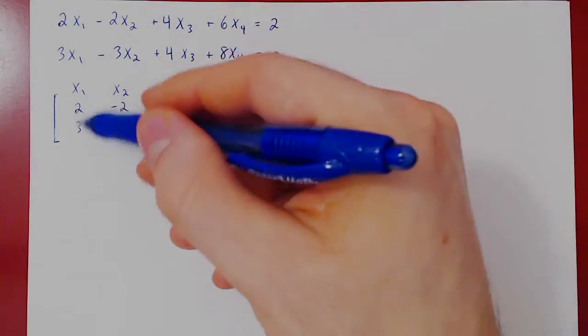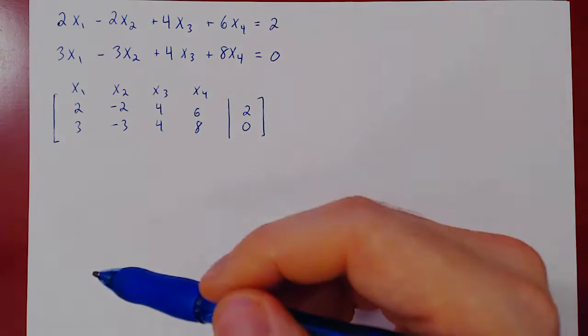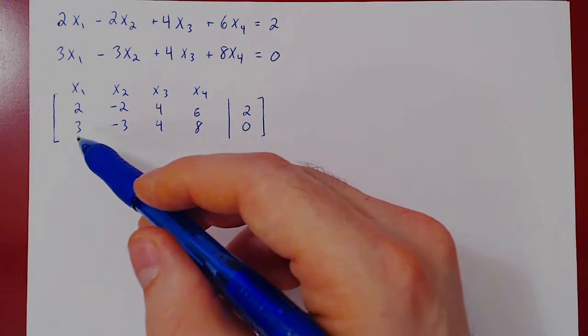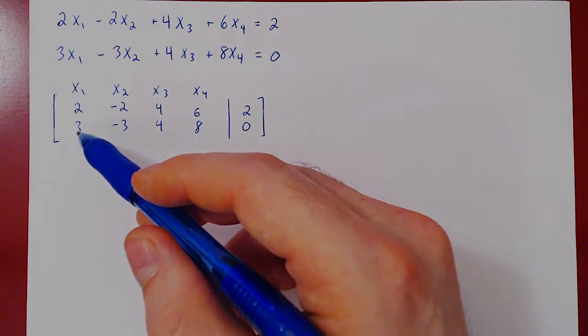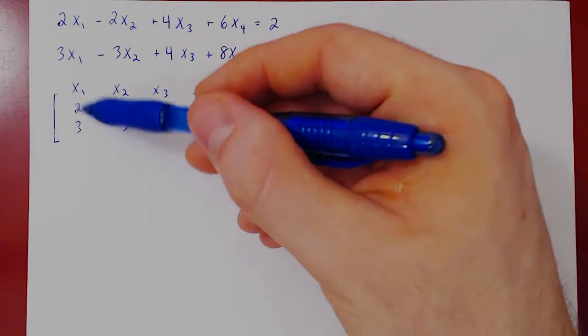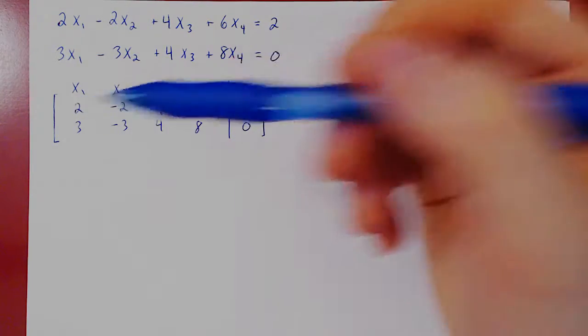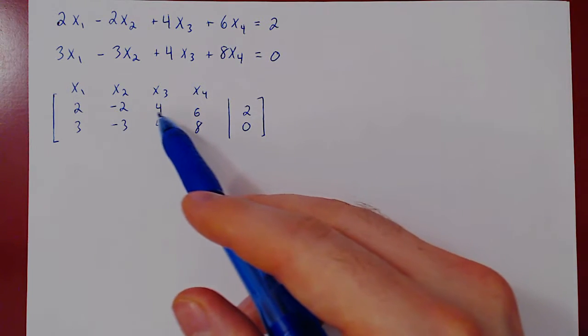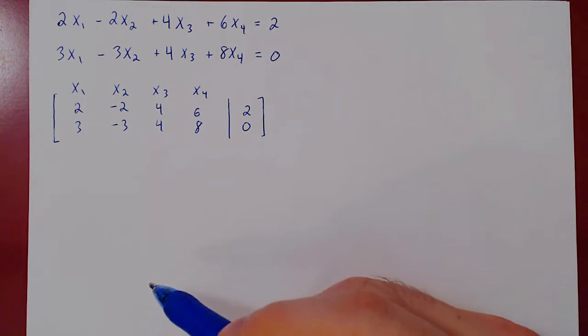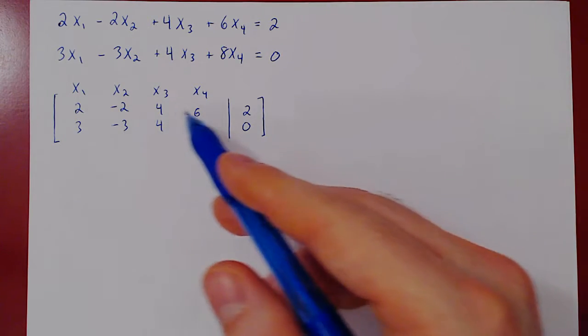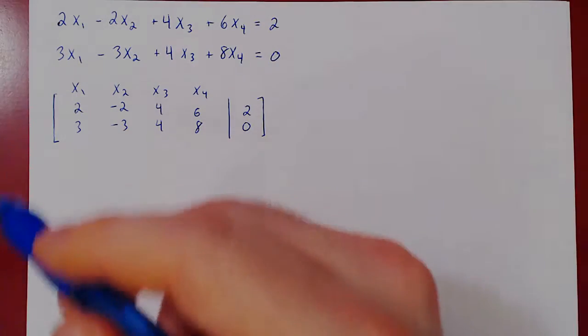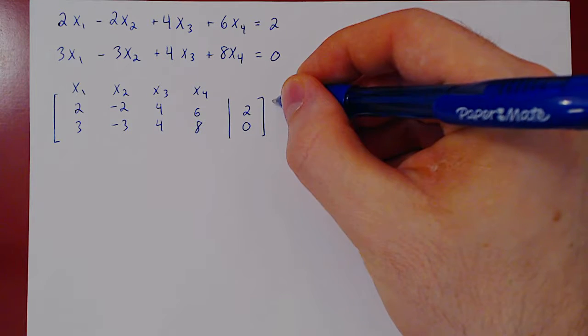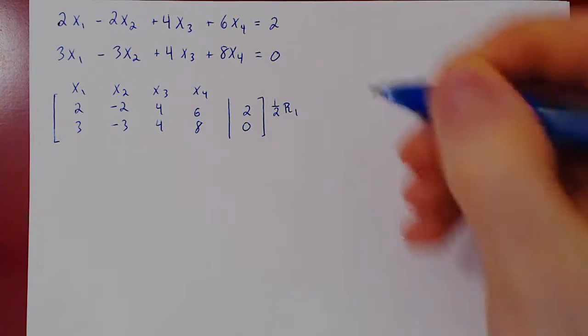And we'll try and get, in the leftmost column, a leading one in the top row. Now, if you notice, this is a trick we've used before. We could here do row 2 minus row 1, because 3 minus 1 is 1. But if you notice also, every coefficient in the first row is divisible by 2. So here we can multiply row 1 by 1 half, get our first leading one that way, because this will not introduce any fraction. We'll do 1 half of row 1.